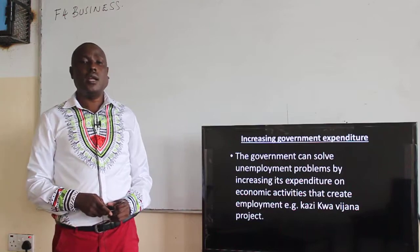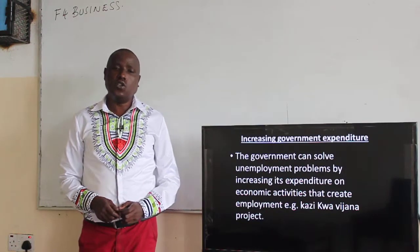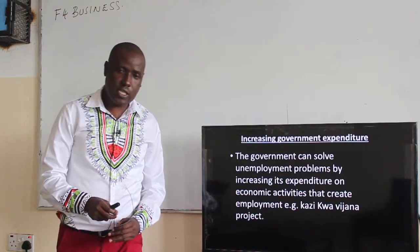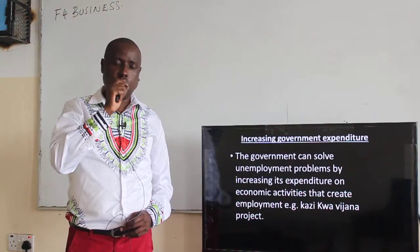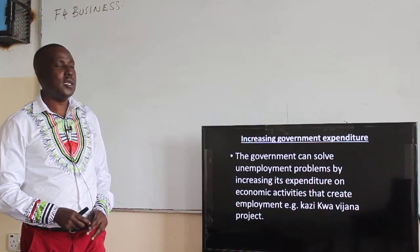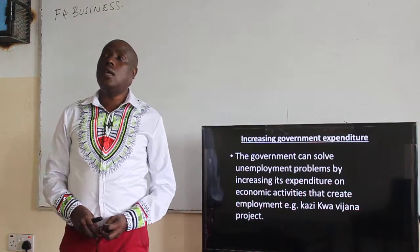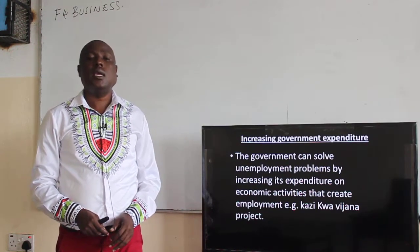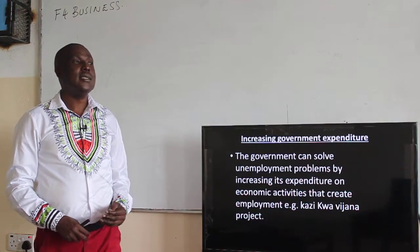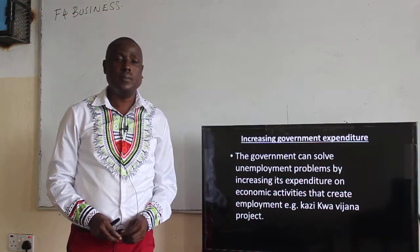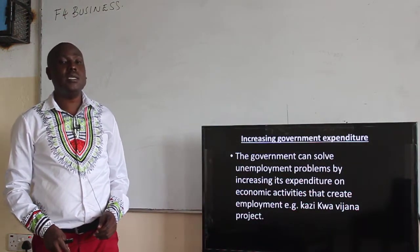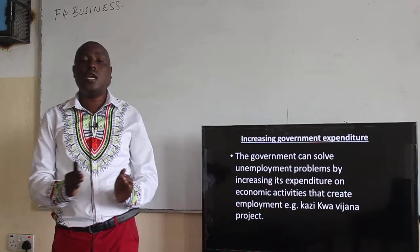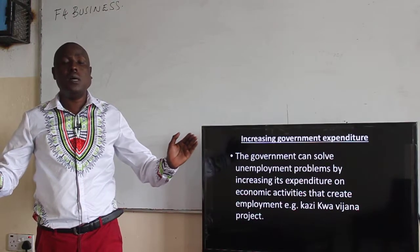We can also increase government expenditure. The government can solve unemployment problems by increasing its expenditure on economic activities that create employment, e.g. the Kazi Kwa Vijana project, the Galana-Kulalu irrigation project, the Standard Gauge Railway, and Kazi Tele. So if the government pumps in money, these projects create a lot of employment.